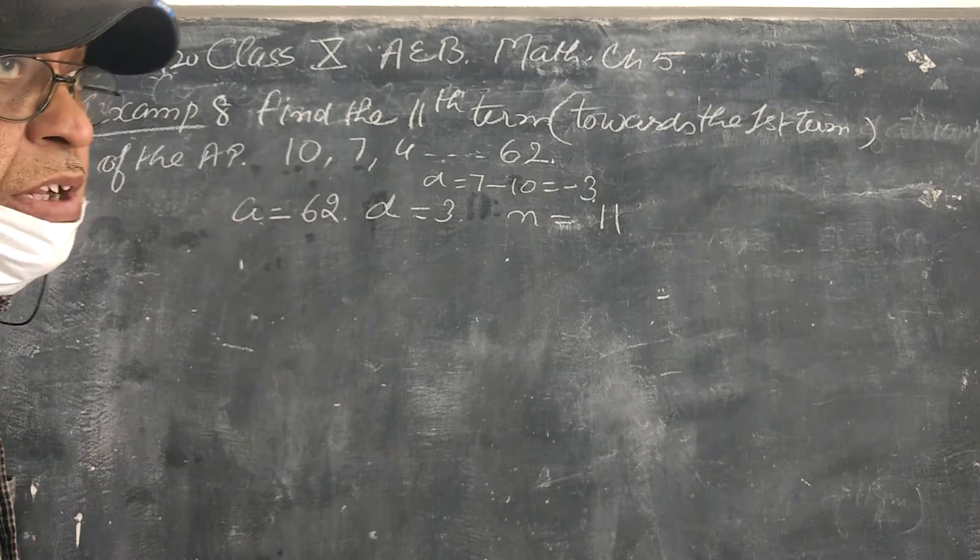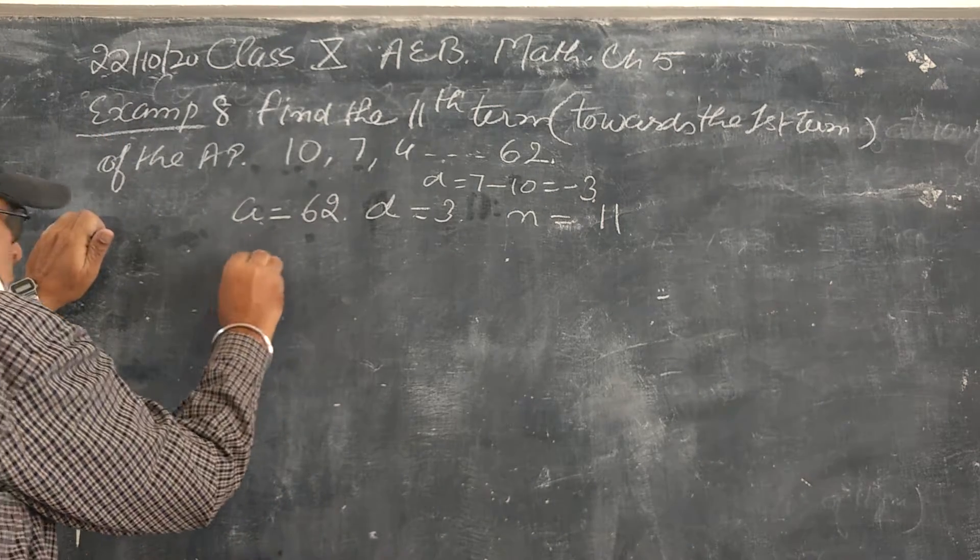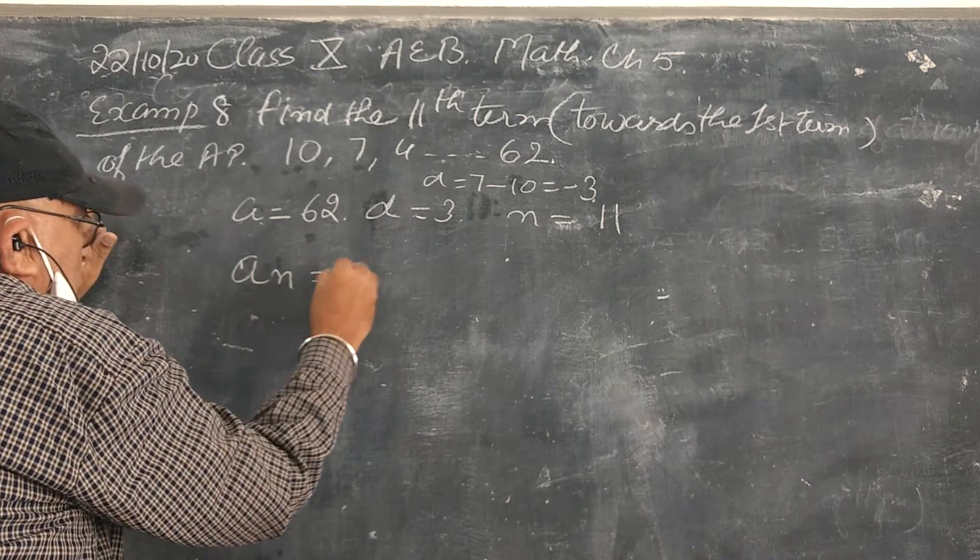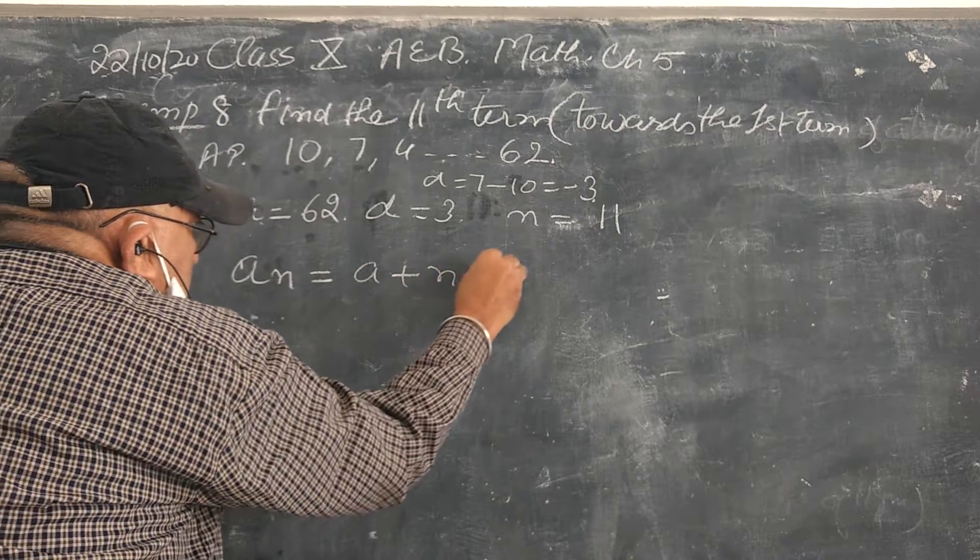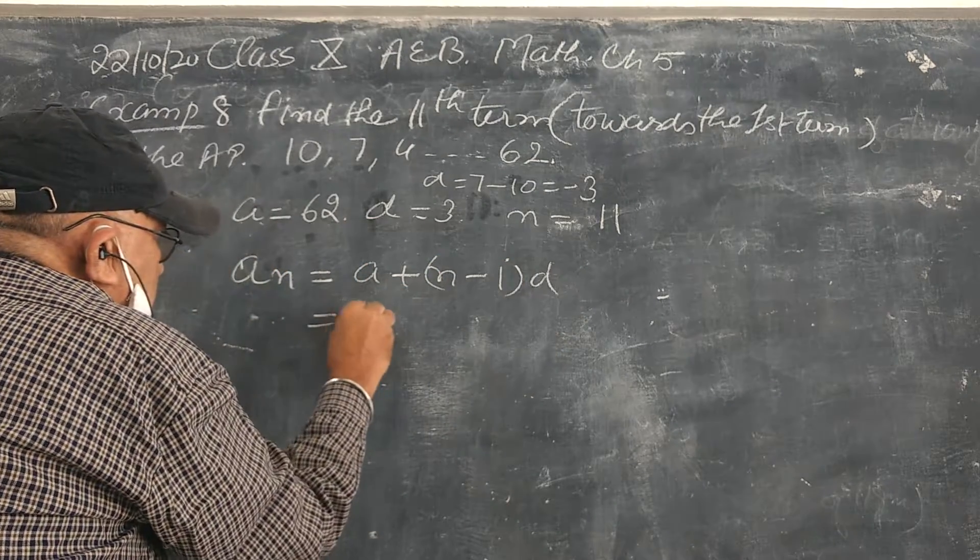So it is equal to 11. So I have to consider, an equal here, plus n minus 1 equal to b. A equals 62.